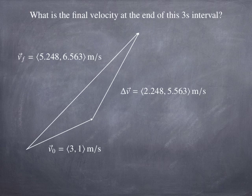Because these are vectors, we need to add the x components and the y components. So 3 plus 2.248 is 5.248. And 1 plus 5.563 is 6.563. That's all there is to it. That gives us a final velocity.